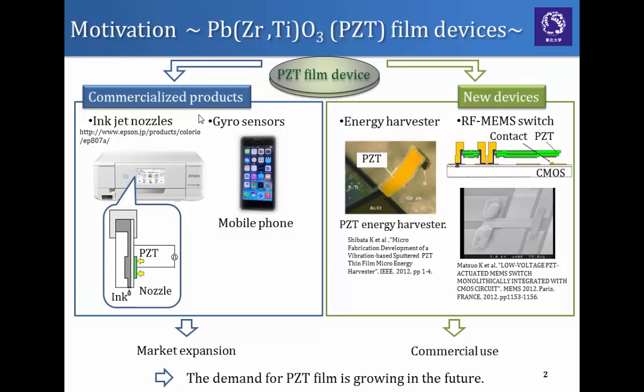Much research has been conducted about PZT film devices. Some devices are already used in commercialized products such as inkjet nozzles in printers or gyro sensors in mobile phones or digital cameras. It is expected for these products to expand their market in the future. Moreover, some new devices such as energy harvesters or RF MEMS switches are also being developed these days. So the demand for PZT film will be growing in the future.